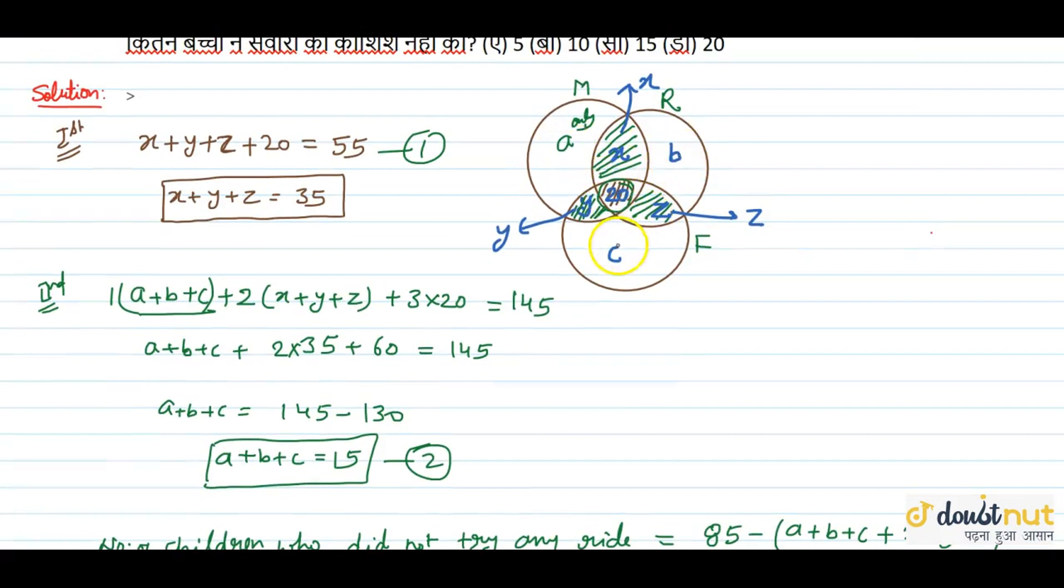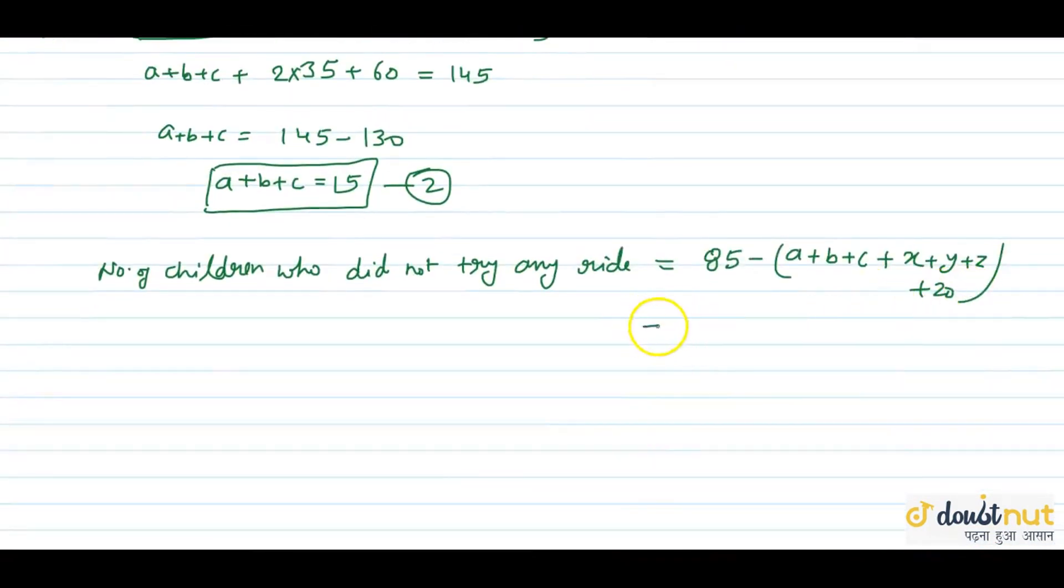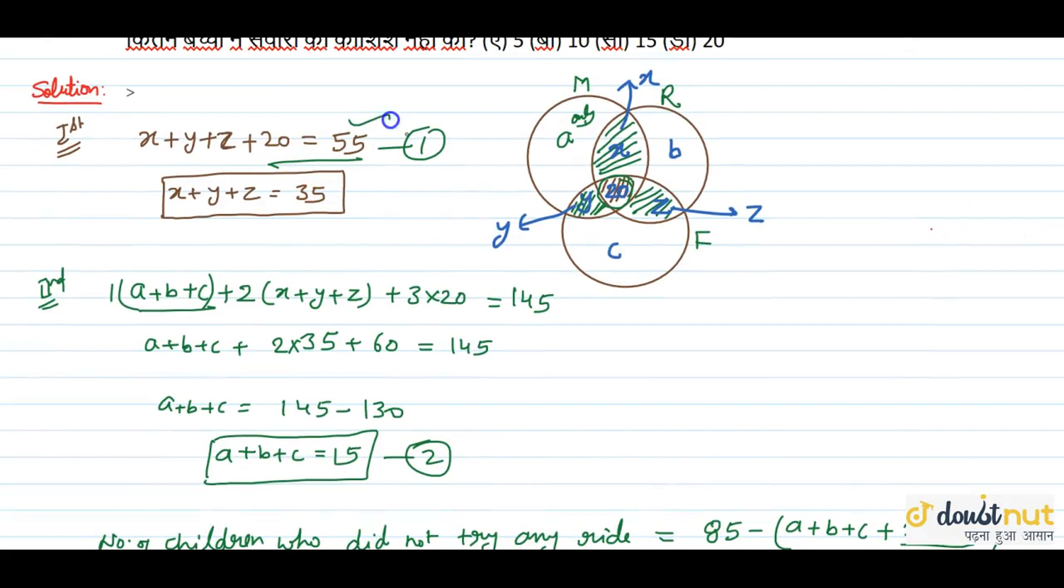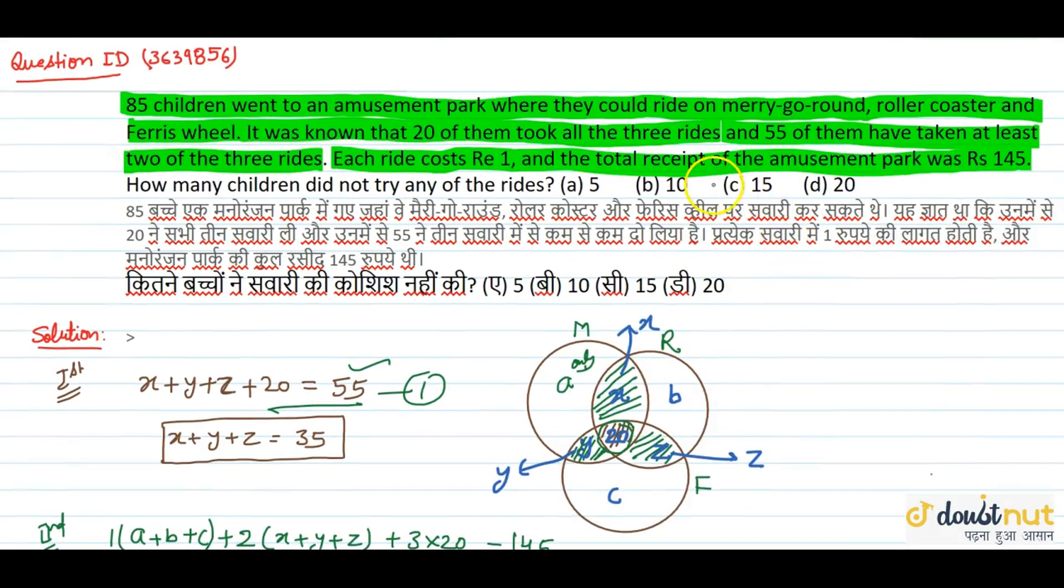A plus b plus c is single ride, x, y, z is double ride and 20 is triple ride. So this equals 85 minus (15 plus 35 plus 20) which equals 85 minus 70, which equals 15. So 15 kids did not do any ride. This is the correct answer.